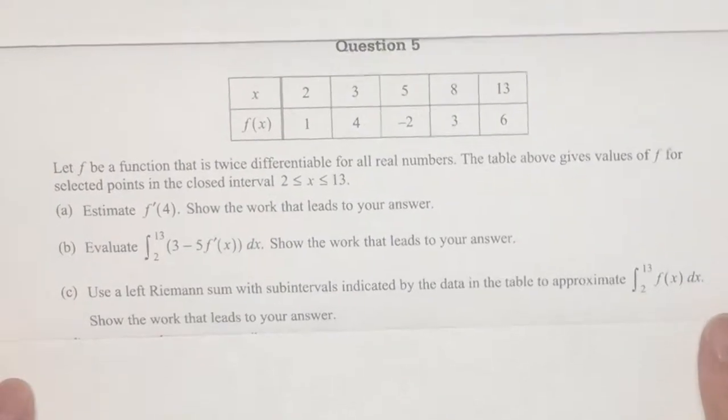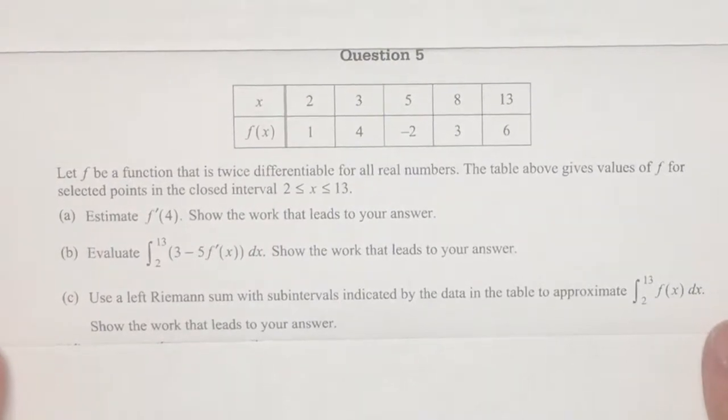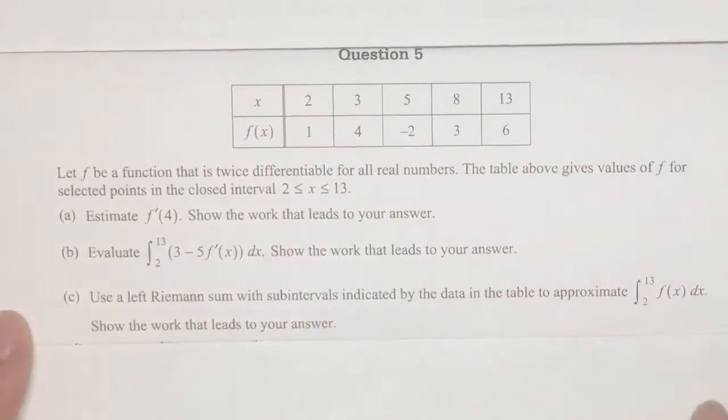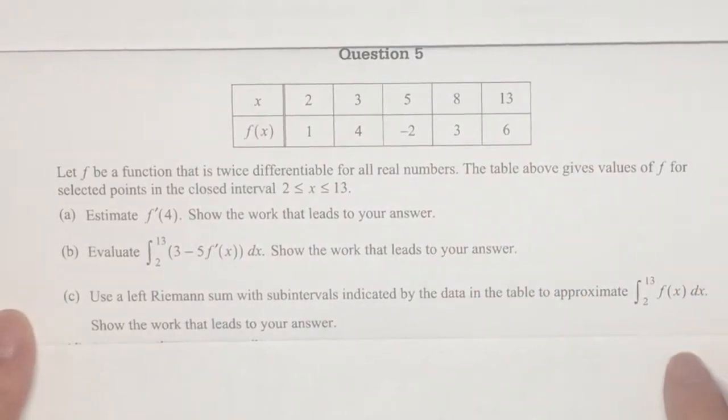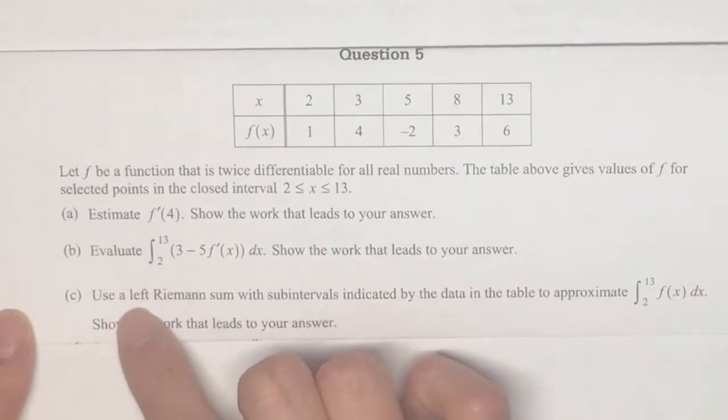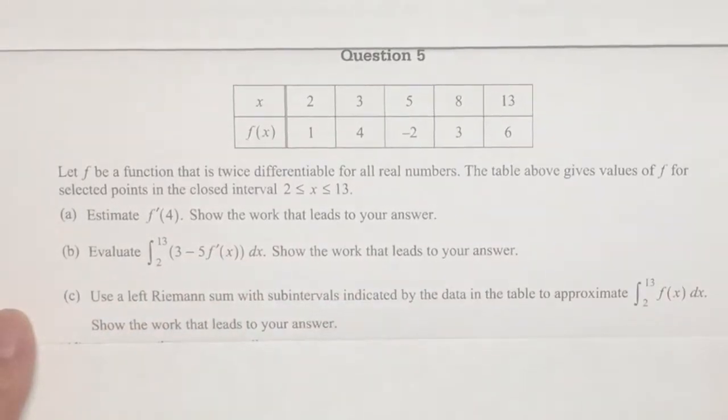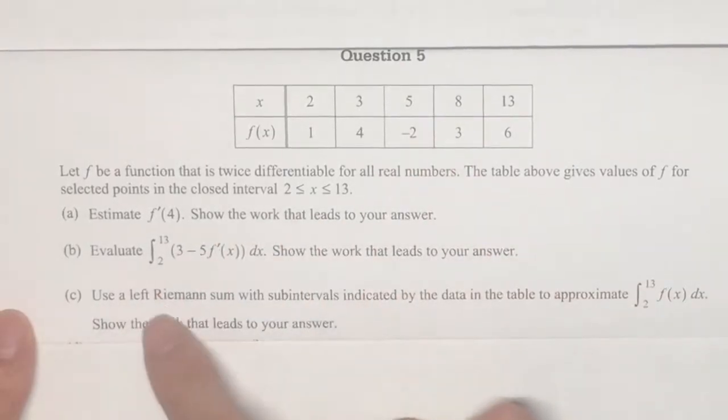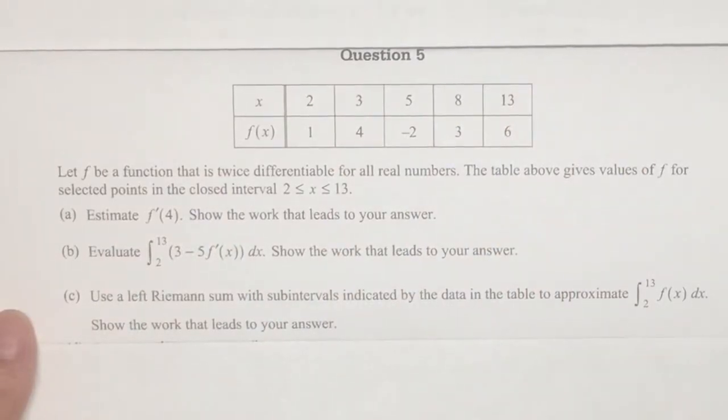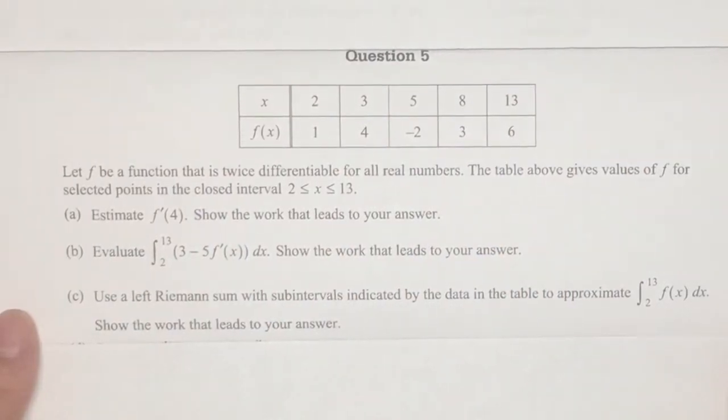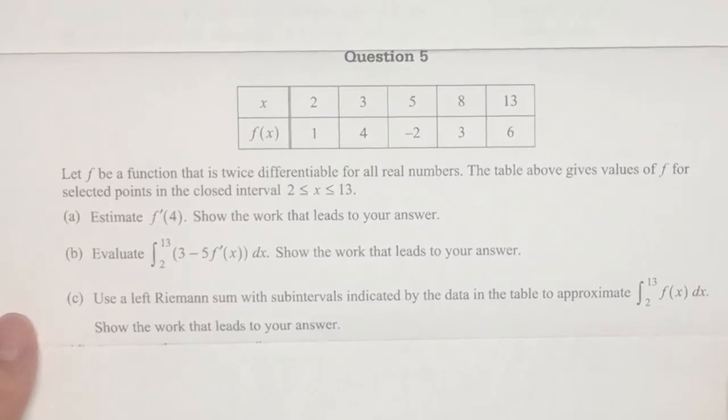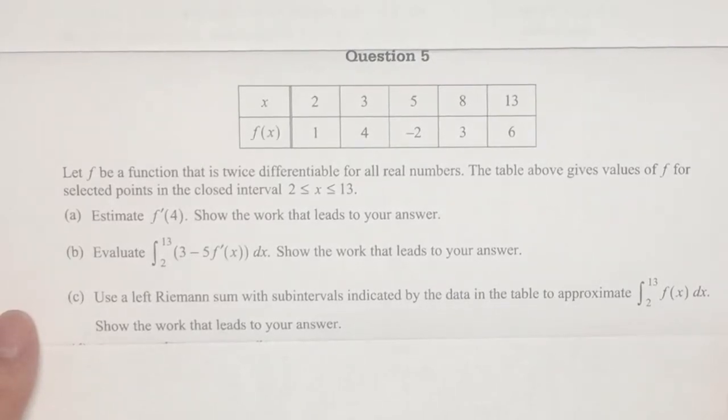Let's apply what we've learned to some free response questions. This is just a standard table problem, which you will get on the AP test. Usually there's only just one question dealing with the specific topic of Riemann sum, like C in this case. But we'll just go through the entire problem just to make sure that we understand the concept of Riemann sum and integrals and how they intertwine. Let's read this question. Let F be a function that is twice differentiable for all real numbers. The table above gives values of F for selected points in the closed interval 2 to 13.